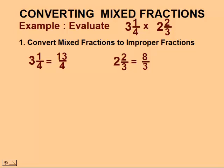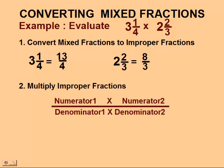We've converted both mixed fractions to improper fractions. The next step, we will multiply these improper fractions. To multiply fractions together, all you need to do is multiply the two numerators together and the two denominators together. So we'll have 13 times 8 over 4 times 3.